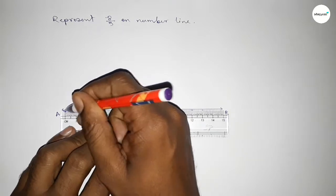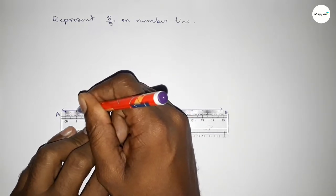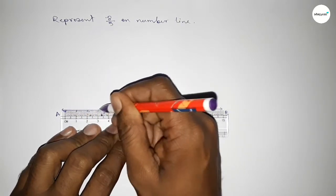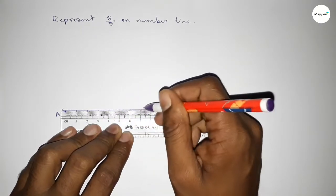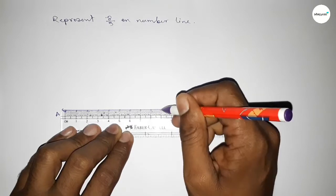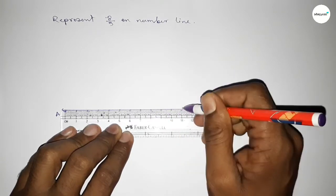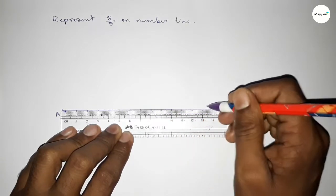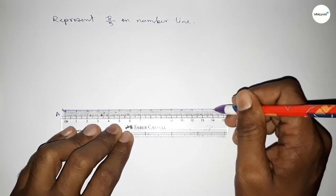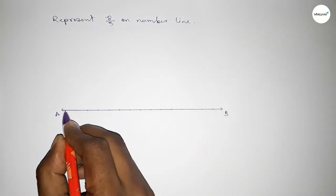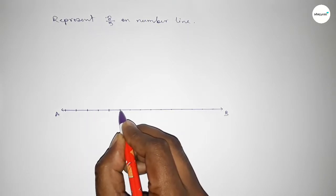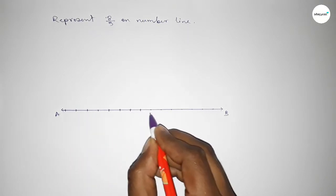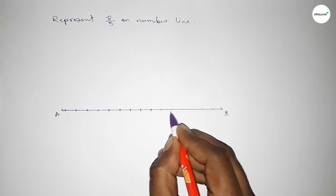Now we have to mark the numbers on the line by using a scale. Marking the numbers with a deep color to understand perfectly, so we can mark the numbers on the number line.